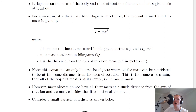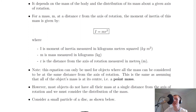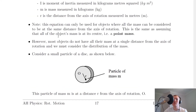Now for a mass m at a distance r from the axis of rotation, the moment of inertia is given by I equals m times r squared, where I is the moment of inertia measured in kilogram metre squared, m is mass measured in kilograms, and r is the distance from the axis of rotation measured in metres, just like it was for torque. The reason moment of inertia has the units kilogram metre squared can be seen from the equation — multiplying the units for mass by the units for distance squared gives kilograms metres squared. Note that this equation can only be used for objects where all the mass can be considered to be at the same distance from the axis of rotation, i.e. a point mass.